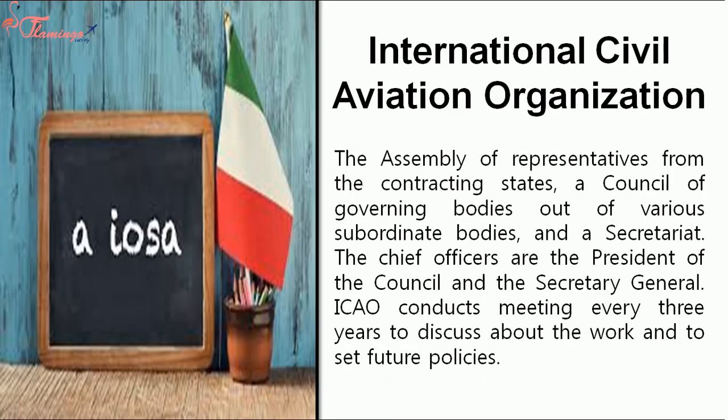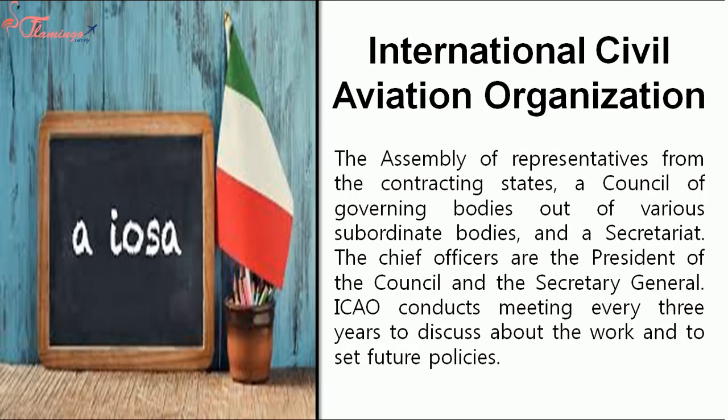ICAO consists of an assembly of representatives from the contracting states, a council of governing bodies with various subordinate bodies, and a secretariat. The chief officers are the President of the Council and the Secretary-General. ICAO conducts meetings every three years to discuss its work and to set future policies.